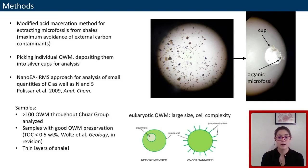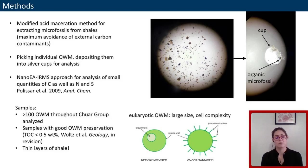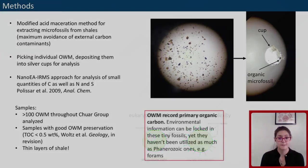Microfossils come from a variety of settings — samples representing deep and shallow environments, as well as oxic and ferruginous bottom waters. Only low-TOC shales were analyzed, as those were found to yield the best microfossil preservation. Only thin layers of shale were processed whenever possible, so the time-averaging bias is minimized. And importantly, the microfossils record primary carbon.